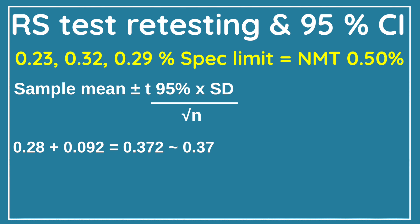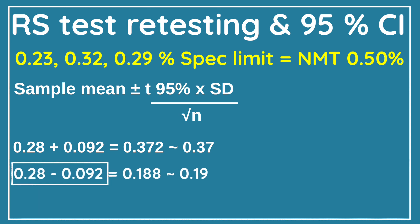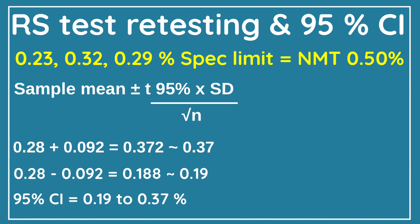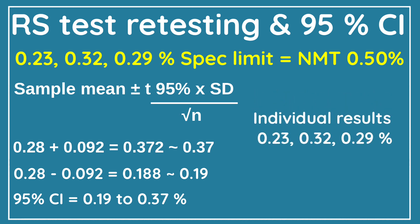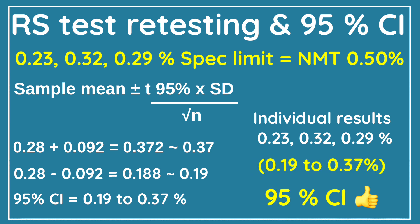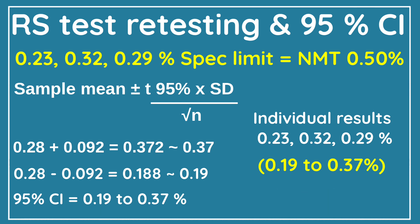First, we add 0.092 to the mean value 0.28, giving 0.372, which rounds off to 0.37. Similarly, we subtract 0.092 from 0.28, giving 0.188, which rounds off to 0.19. So our 95% confidence interval limit is 0.19 to 0.37. All three individual results are between 0.19 and 0.37, which means the 95% confidence interval limit is met for all three individual results.